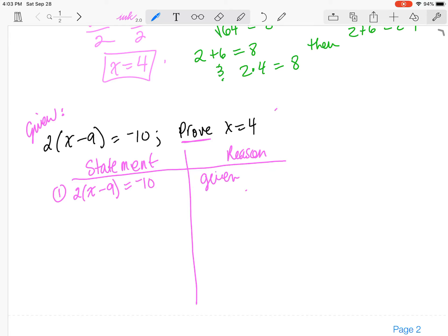And this here is going to be our last statement that we're going to say when we're done. So now all I need to do is, what am I going to do next? I need to distribute that 2. So that's going to give me 2x minus 18, and that's going to be equal to negative 10.